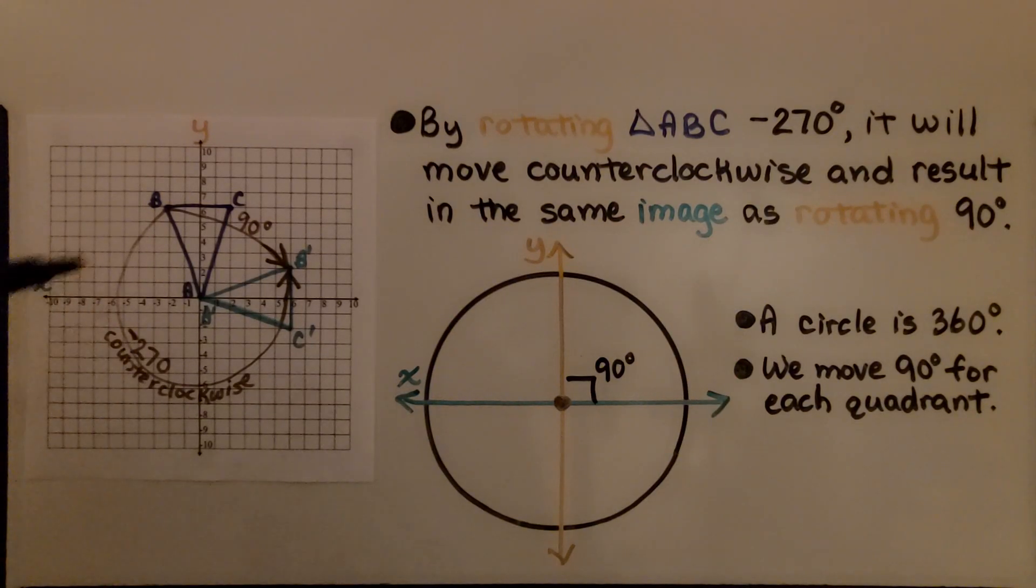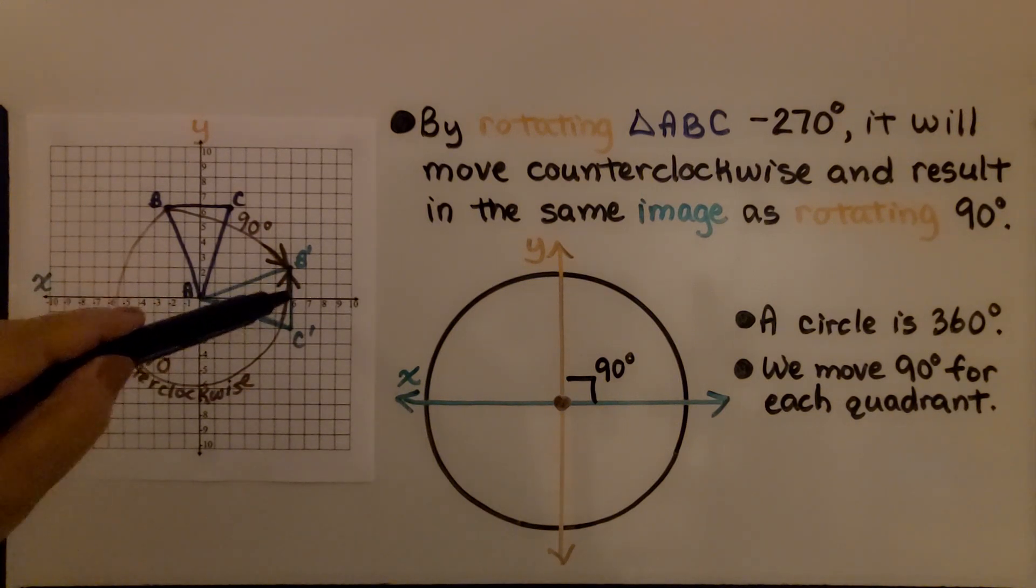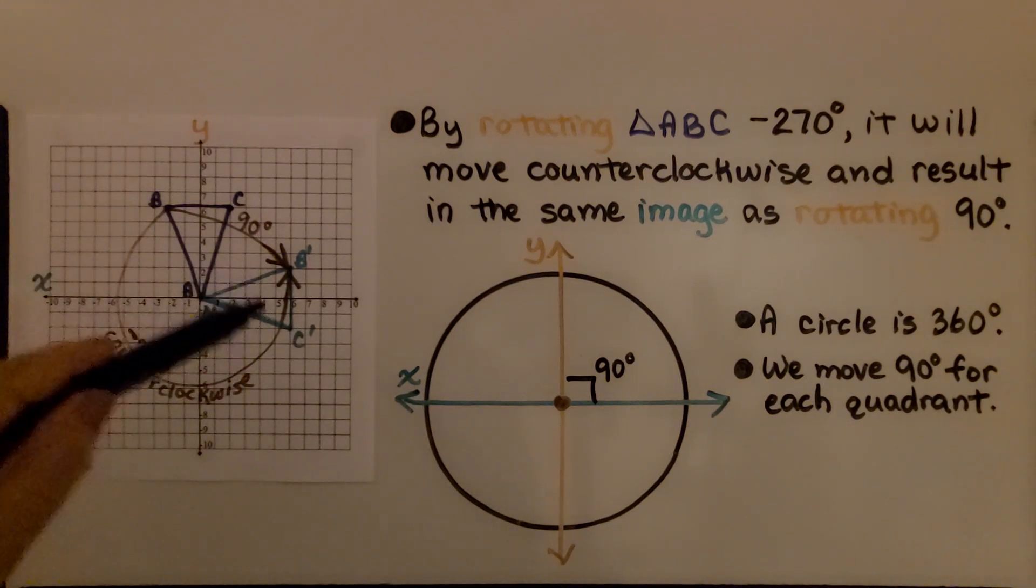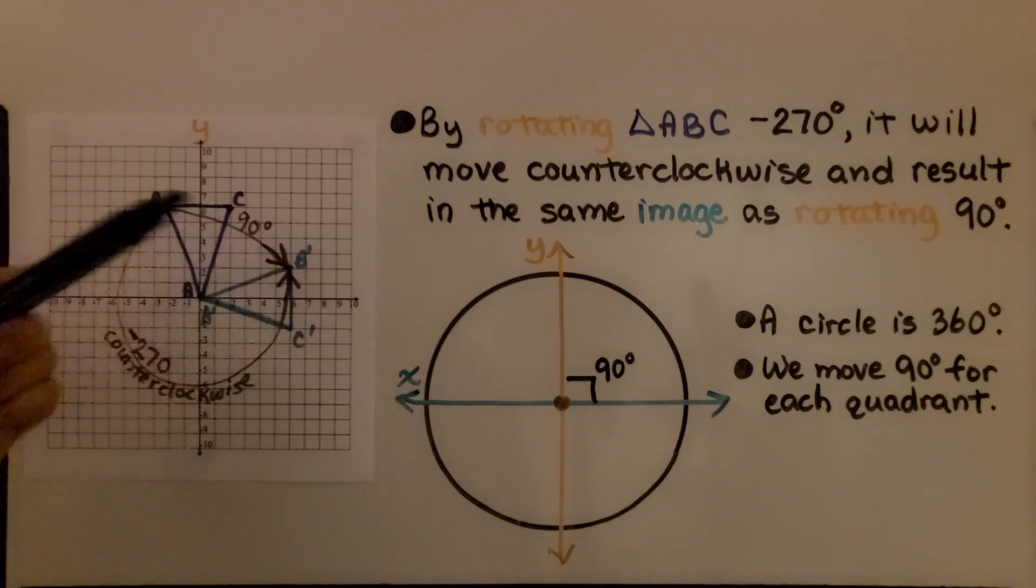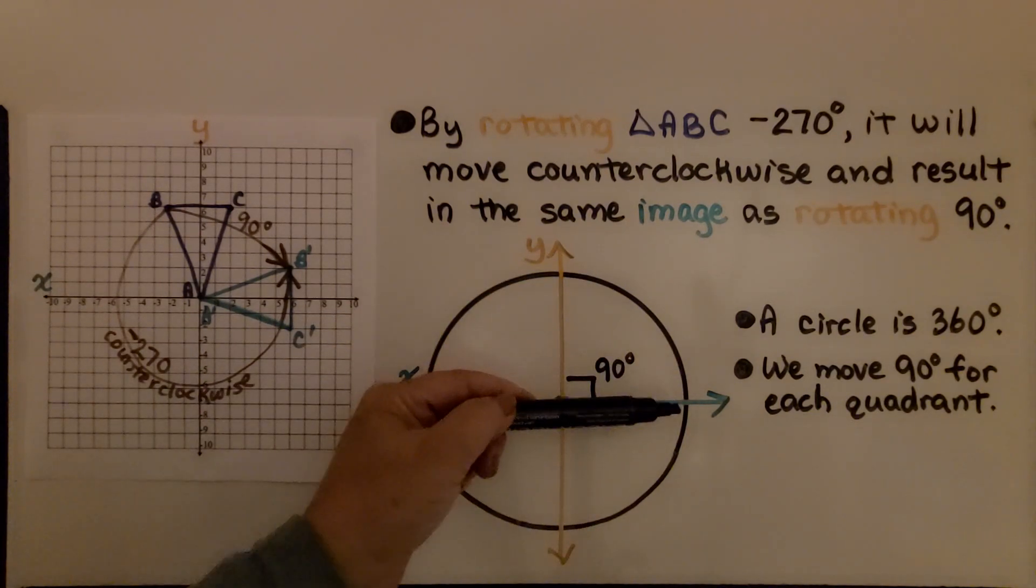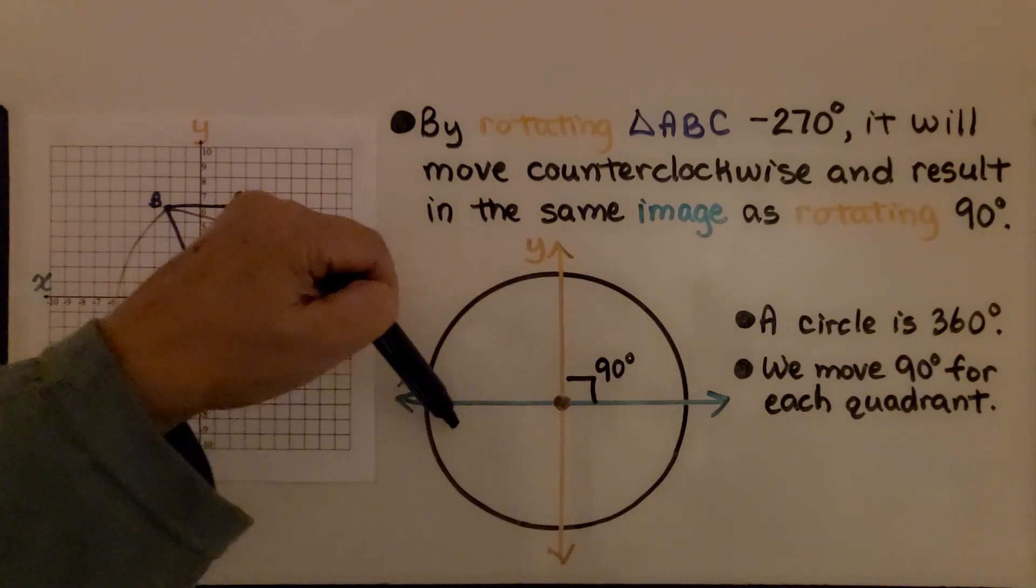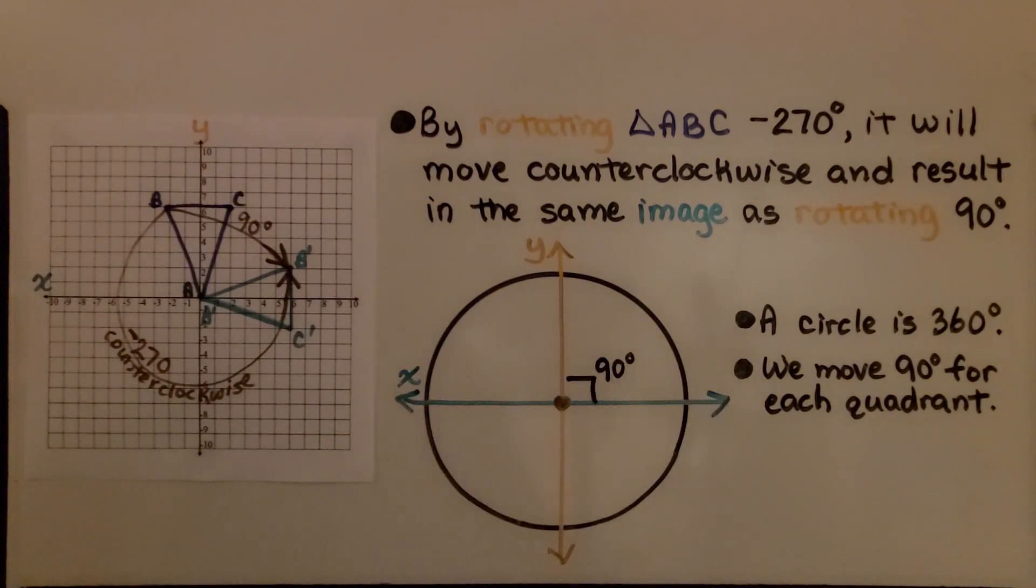By rotating triangle ABC negative 270 degrees, it will move counterclockwise and result in the same image as rotating it 90 degrees. A circle is 360 degrees. We move 90 degrees for each quadrant. 90 times 4 is 360.